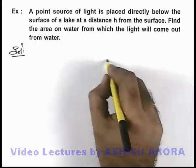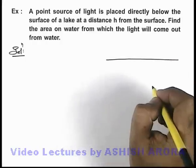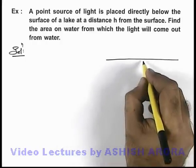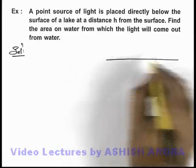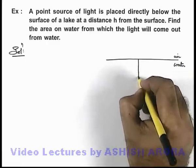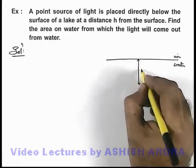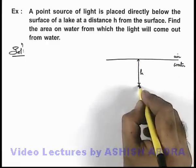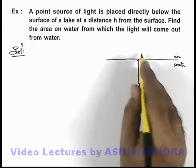If we draw the ray diagram of light rays which are coming out from the water, here we can see if this is air and this is water in the lake, and as per the given situation, light source is placed at a depth h below the water surface.